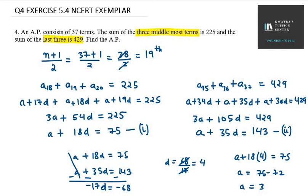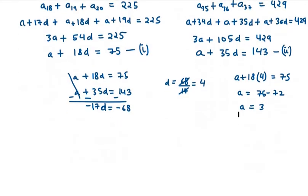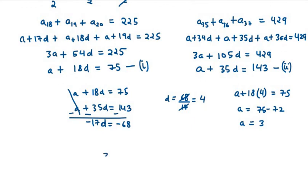So our first term a is 3. The second term is a + d = 3 + 4 = 7. Keeping a gap of 4 between each term, the AP is 3, 7, 11, 15, and so on. That is your AP for question number 4. Thank you for watching. Please like, share and subscribe to Ajaan. Thank you.